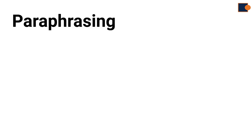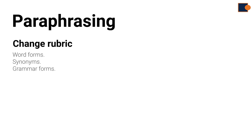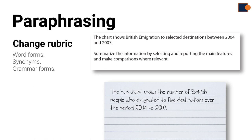Next is paraphrasing. In order to write the introduction, you need to change the rubric by writing different word forms, synonyms, and grammar forms. But make sure you don't include the word below. In this example, you can see the sample essay where some parts of the rubric are written in a different way — 'British emigration to select destinations' is written as 'British people who emigrated to five destinations.'